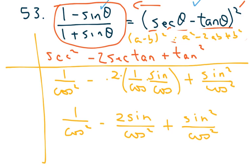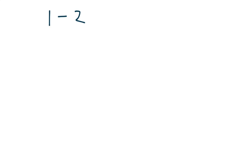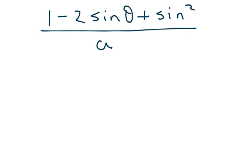Let me rewrite this on the next line. Since each piece was over cosine squared, I combine them: one minus two sine theta plus sine squared theta, all over cosine squared theta.